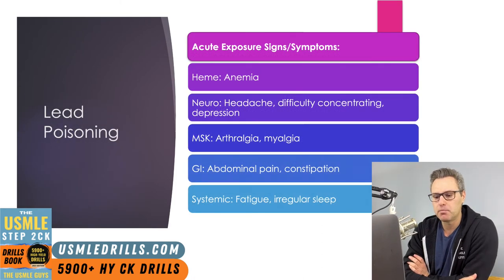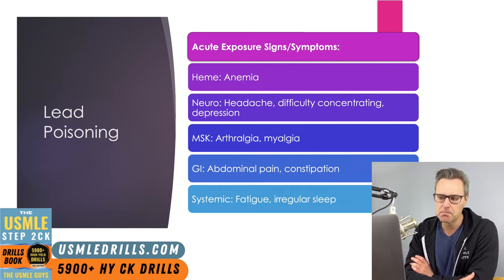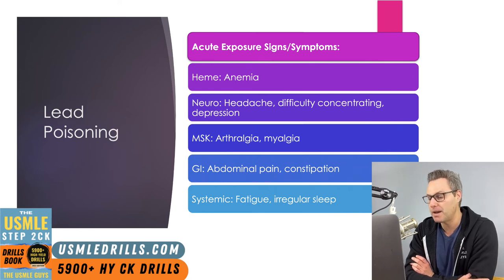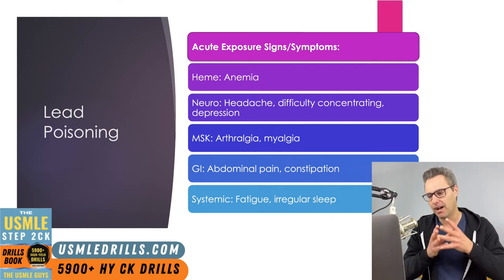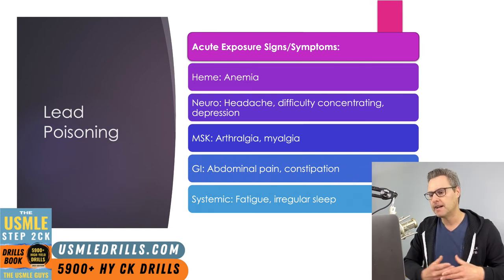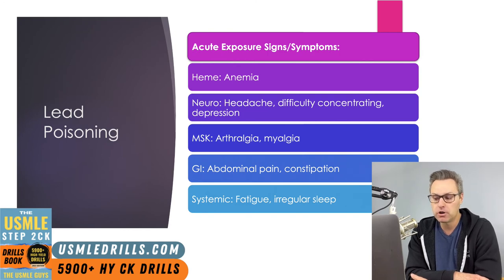Now let's look at lead poisoning. Lead exposure in adults can be occupational — especially metal workers in battery production, lead mining, or smelting. It can also occur from contaminated drinking water via lead-soldered pipes, or from lead-based paint in homes built before the 1970s — so an older house that hasn't been renovated could be a source of lead-based paint exposure.